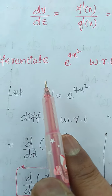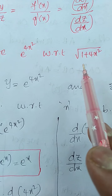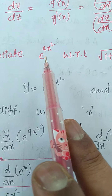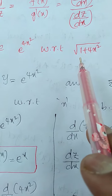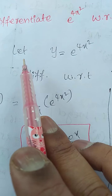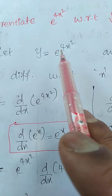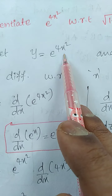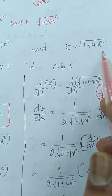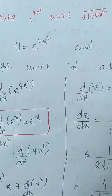Question number one: differentiate e to the power of 4x² with respect to the square root of 1 plus 4x². First of all, let us assume the first function as y: y = e to the power of 4x². Another function as z: z = square root of 1 plus 4x². Now differentiate with respect to x on both sides.